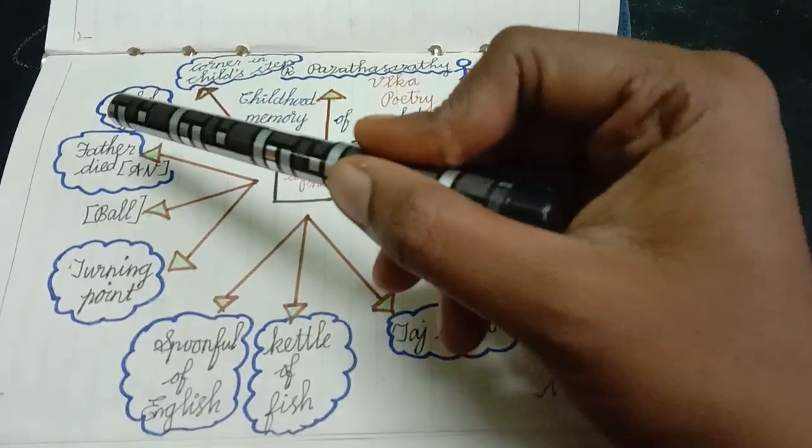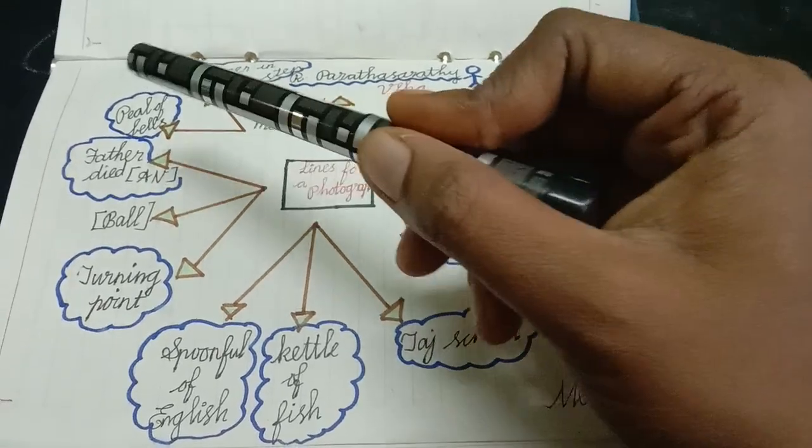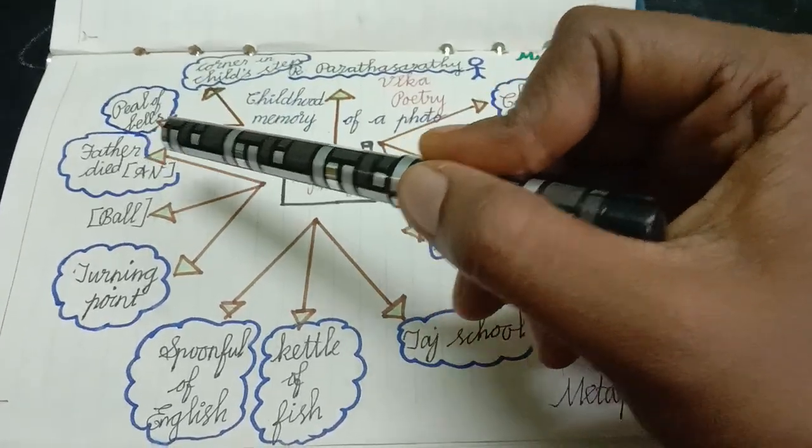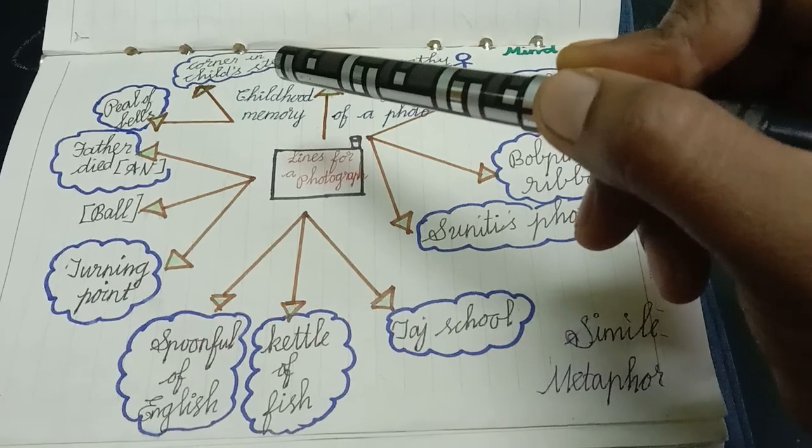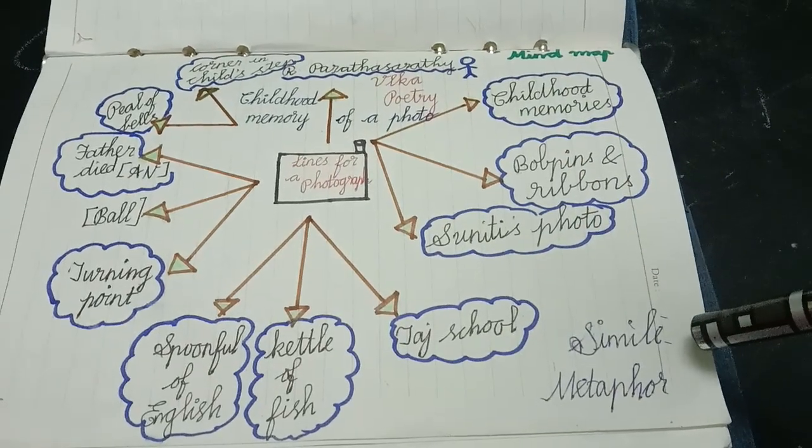Her father died one afternoon. Peel of bill corner and child's step. So terms used in this poem are simile and metaphor.